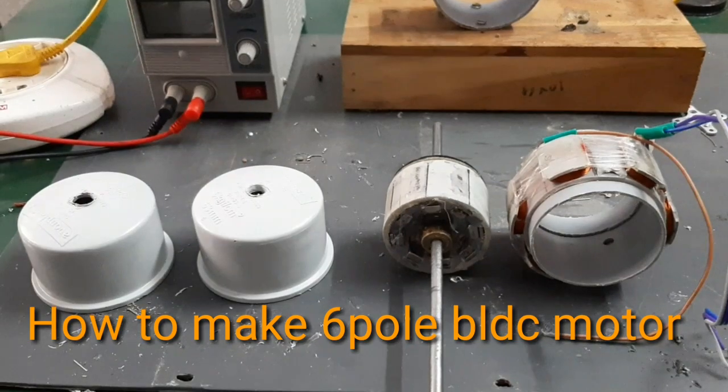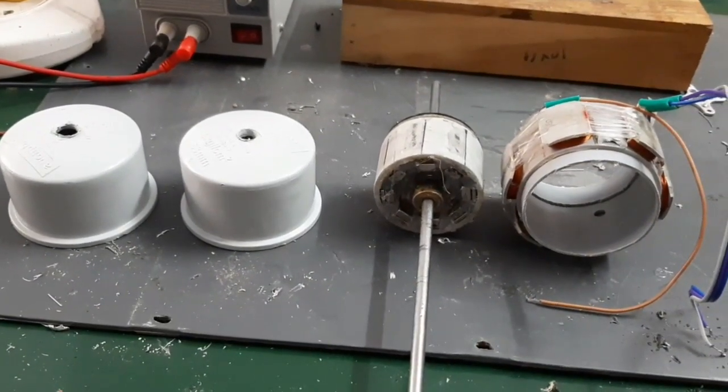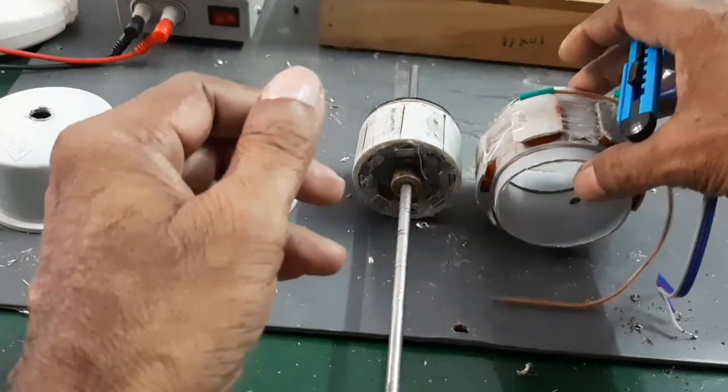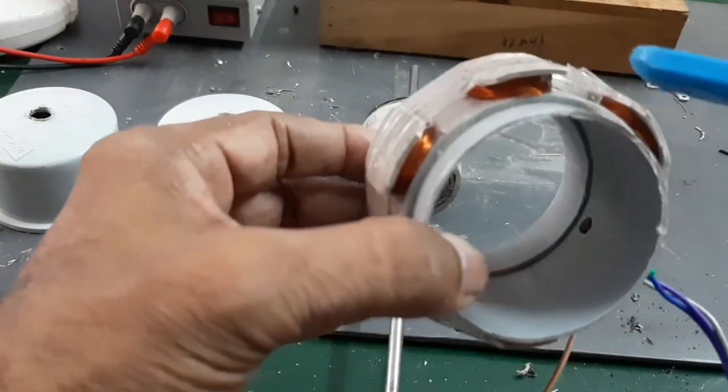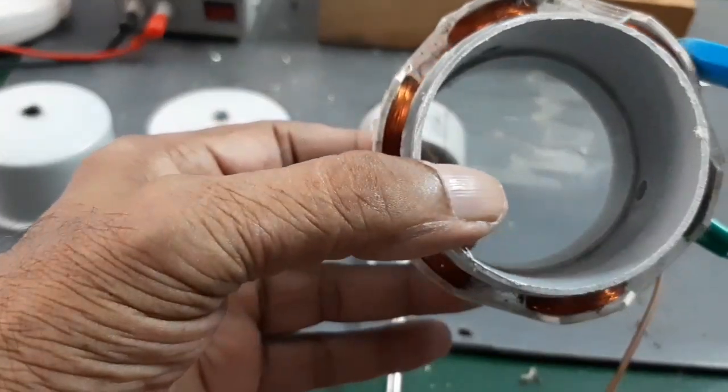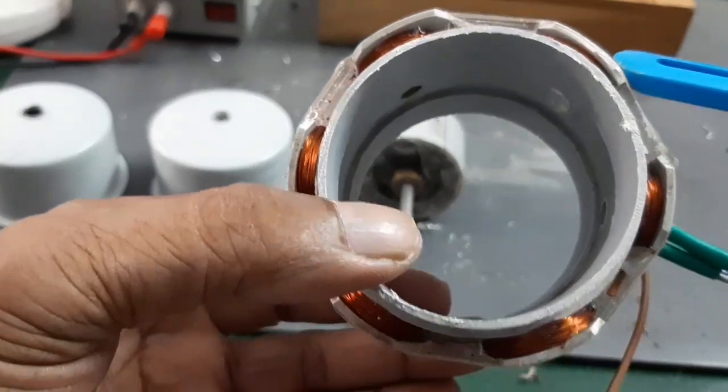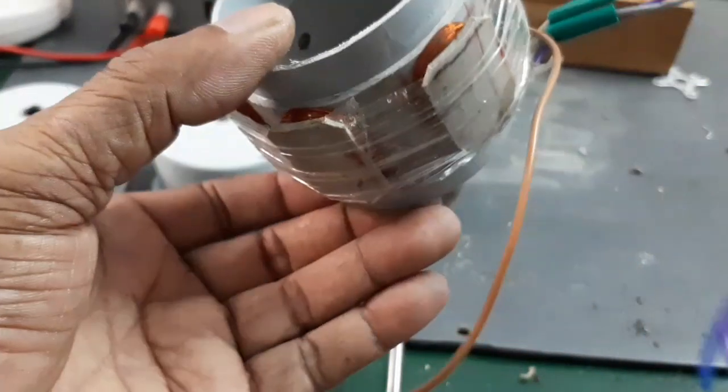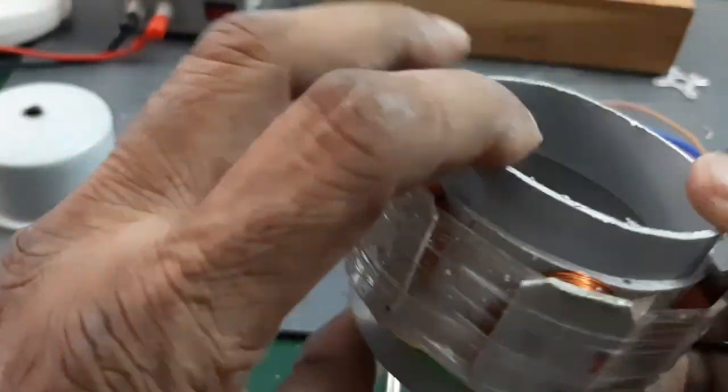Hello guys, now I am going to explain how to make a six-pole BLDC motor. This is the PVC pipe and make a six-pole for providing coil. Each pole coil has 300 turns of 30 SWG wire. This is the three-phase stator BLDC motor stator winding.